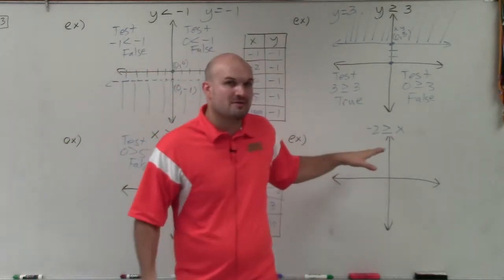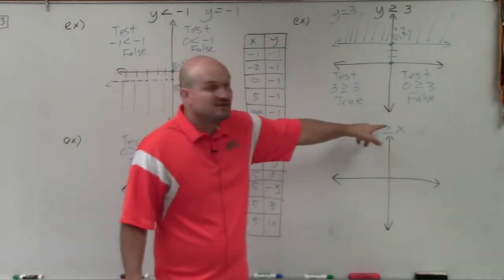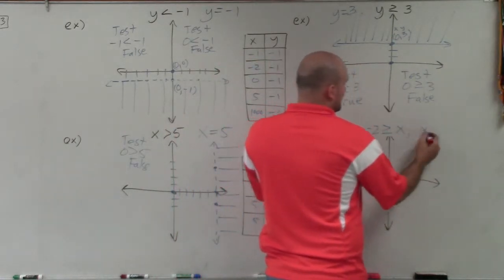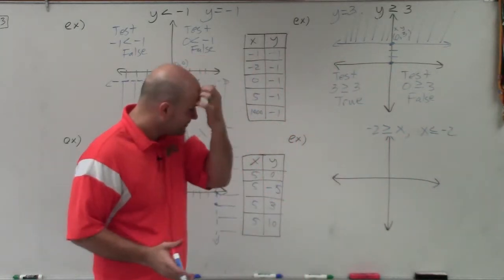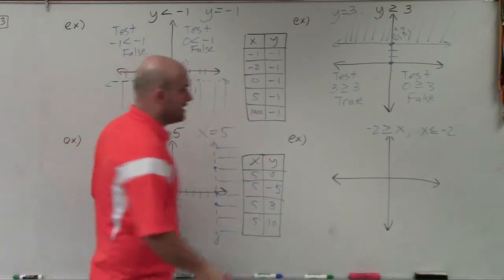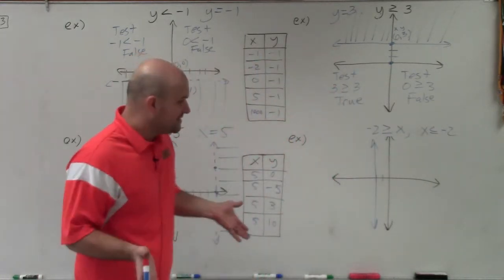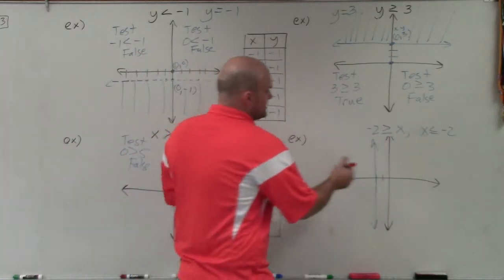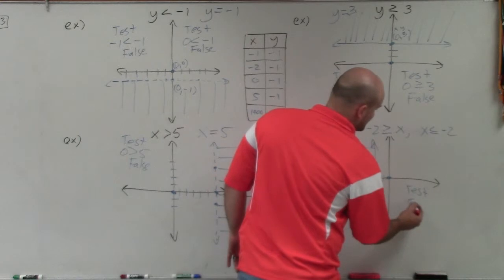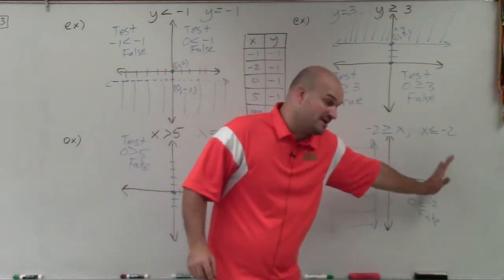A common mistake students make is saying the inequality arrow points right, so shade right — but that only works when the variable is on the left-hand side. If the variable is not on the left, rewrite it so it is. For example, rewriting gives x less than or equal to negative 2. This is a less than or equal to, so it's a solid line. Go where x equals negative 2 and draw a solid line. Testing (0, 0): 0 is less than or equal to negative 2 — that's false. Since (0, 0) is false to the right, all points to the left are true, so shade left.